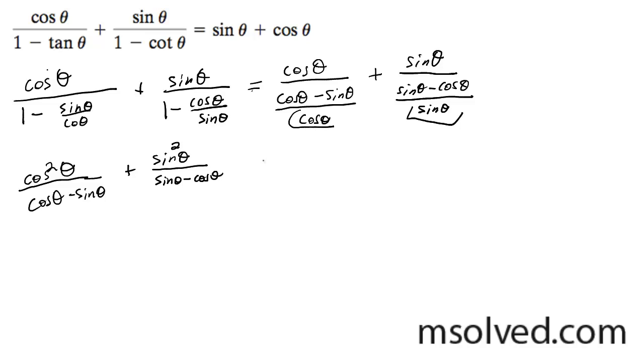And what you can actually do here now is because you've got the same—actually, you don't have the same denominators, but you can multiply through this right portion here by a negative 1.